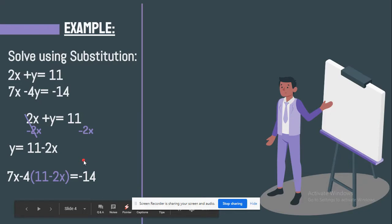So now what you want to do is multiply negative 4 by 11 and negative 4 by negative 2. So negative 4 times 11 is negative 44, and negative 4 times negative 2 is 8. So now what you're going to do is combine the like terms, which are 7x and 8x. And you're going to add them together, which is going to give you the number 15x.